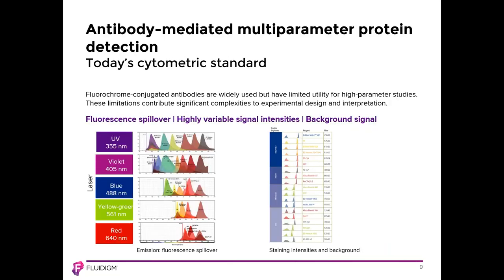The use of fluorescence is still considered the cytometric standard. Fluorochrome-conjugated antibodies are widely used, but they have limited utility for higher parameter studies. There is often significant signal overlap, and other challenges such as highly variable staining intensities, background signal, and autofluorescence also exist. These challenges combine to create limitations that impart significant complexities to experimental design and interpretation. Traditional fluorescence is currently limited in terms of routine use to 18 to 20 parameters at maximum.